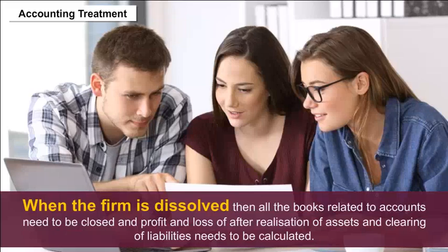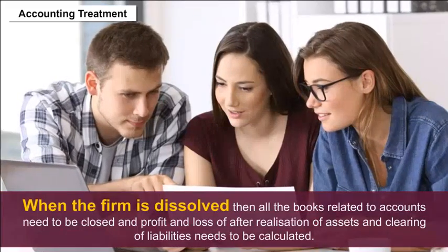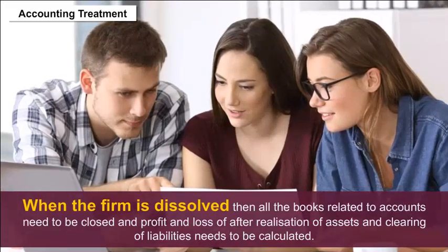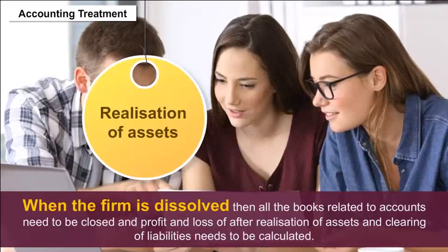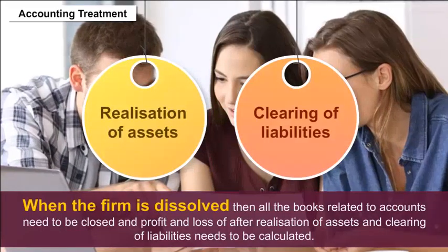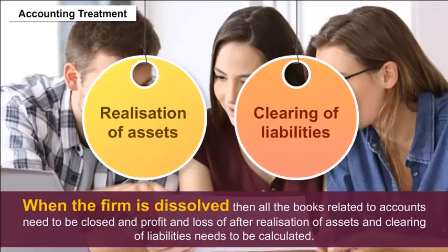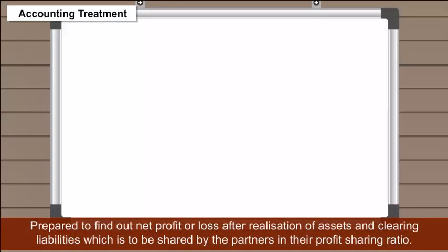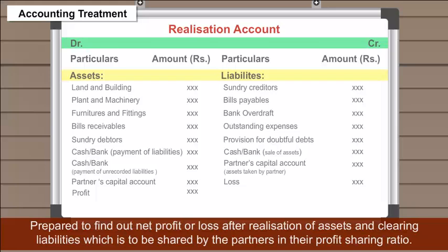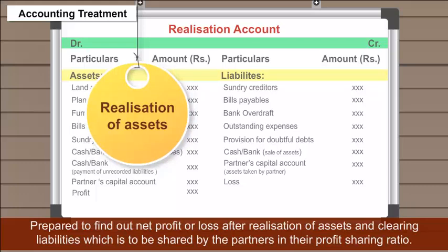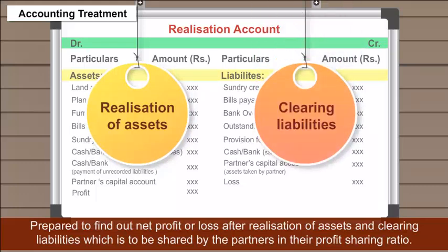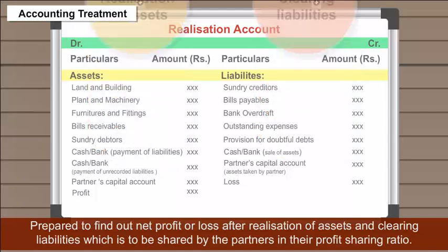Accounting treatment: When the firm is dissolved, then all the books related to accounts need to be closed. Costs and profit and loss after realization of assets and clearing of liabilities need to be calculated. A realization account is to be prepared to find out net profit or loss after realization of assets and clearing liabilities, which is to be shared by the partners in their profit sharing ratio.